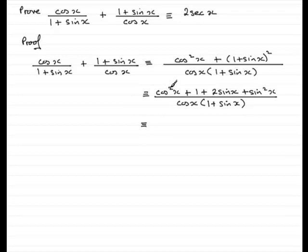Now I notice that cos squared x plus sin squared x can be grouped together. Remember that cos squared x plus sin squared x comes to 1. So we've got 1 there for that plus this one plus the 2 sin x all over cos x multiplied by 1 plus sin x.